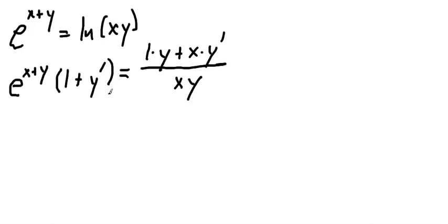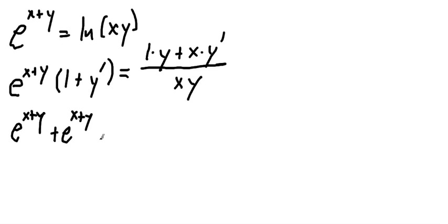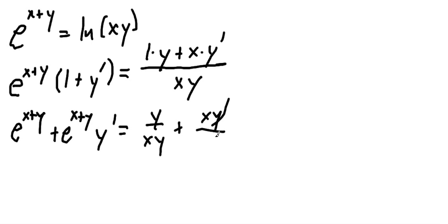Now I want to get all the things with y prime onto one side and everything without y prime onto the other. On the left I distribute e to the x plus y over the sum, getting e to the x plus y plus e to the x plus y times y prime. On the right I distribute the division over the addition, getting y over xy plus x times y prime over xy.